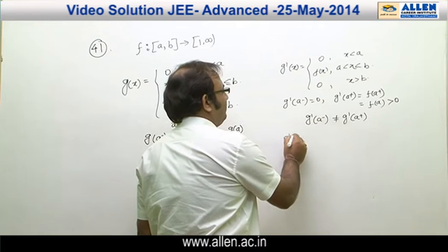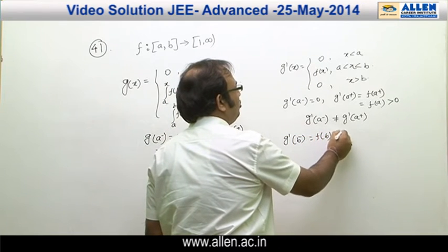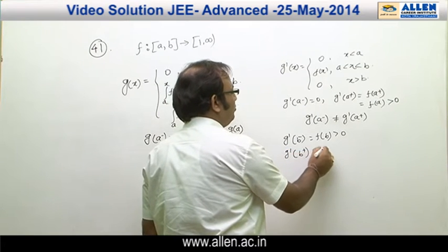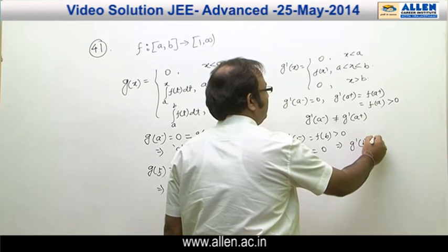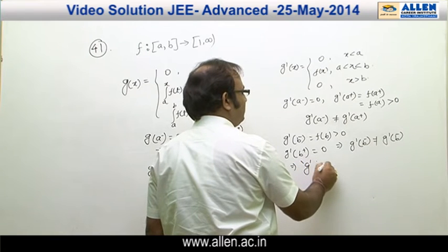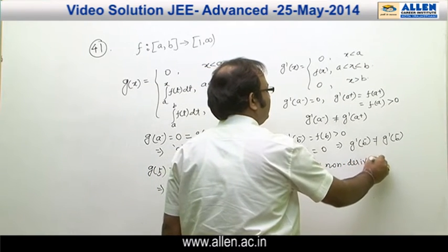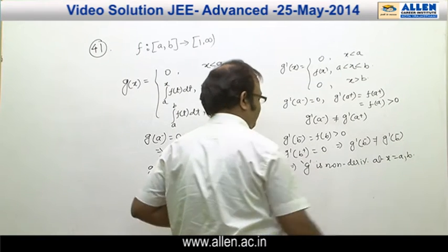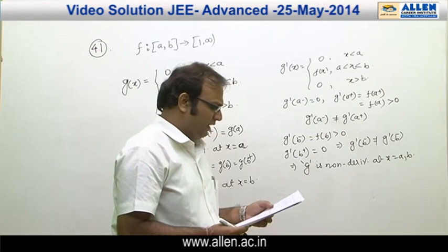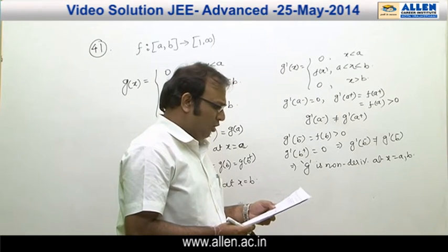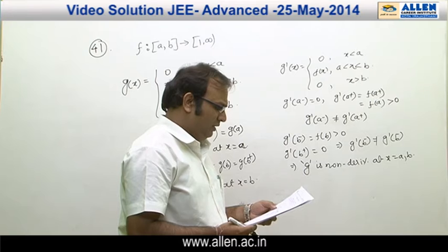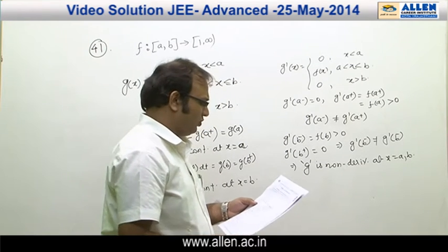Similarly, g'(b⁻) = f(b), which is a positive quantity because of the codomain, while g'(b⁺) = 0. Therefore g'(b⁻) ≠ g'(b⁺), so g is non-derivable at x = a as well as x = b. Reading the options: option a — g(x) is continuous but non-derivable at x = b — is correct. Option b and option d are obviously wrong. Therefore the correct answer for this question is options a and c.